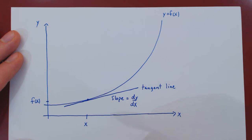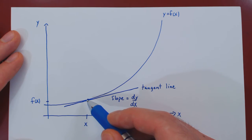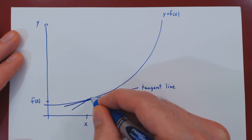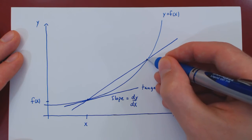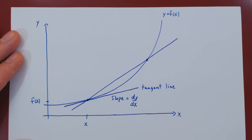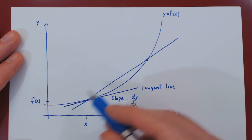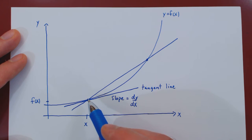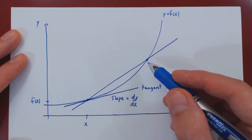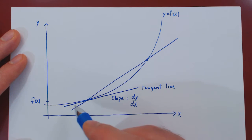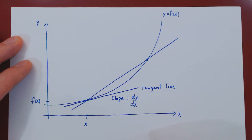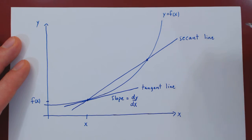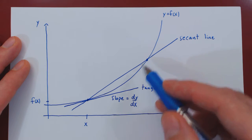The idea is: let's take a different line — a second line that cuts the curve at this point and at another point. Now we have a line with two distinct points on the curve, so we can find its slope. This line is clearly not tangent to the curve, because a tangent line only touches the curve around the point of tangency. So this line, which cuts through the function at two separate points, we call the secant line to the curve — secant, because it cuts through the function at two distinct points.